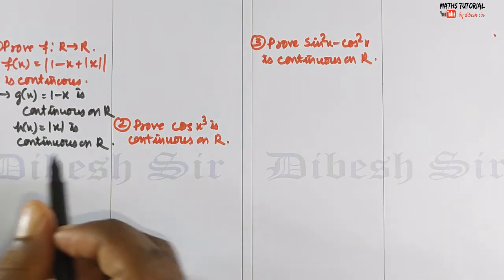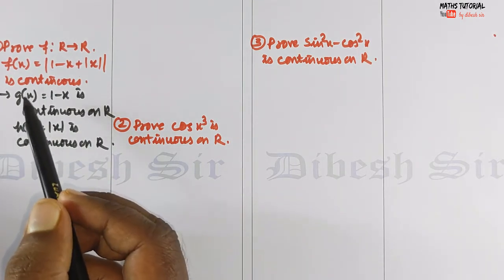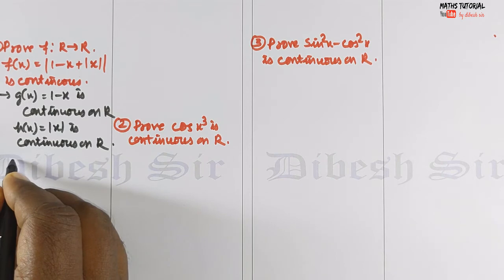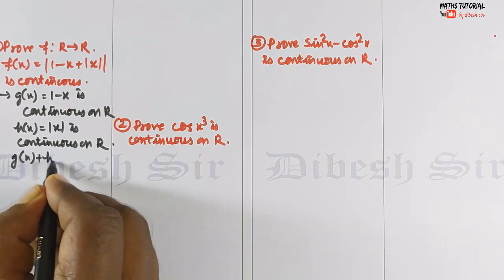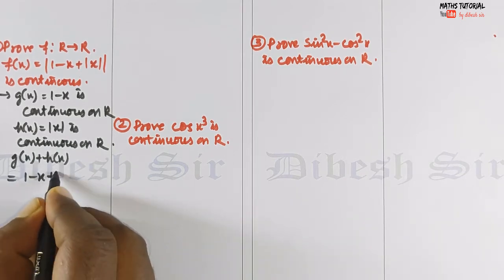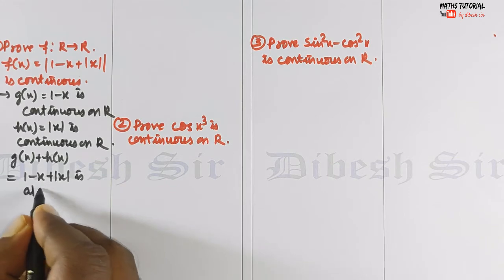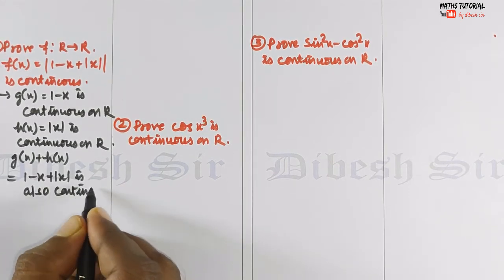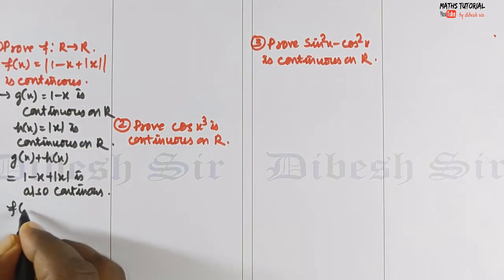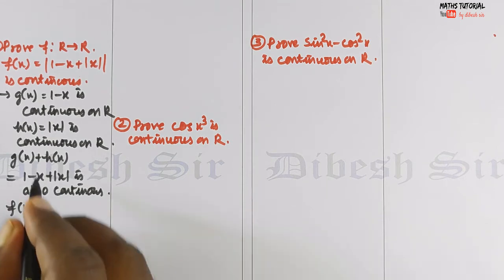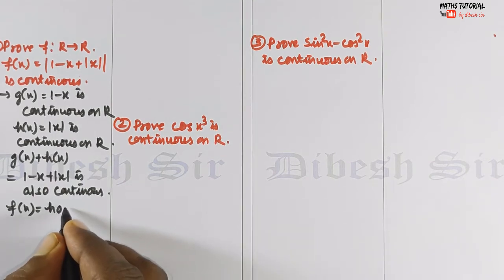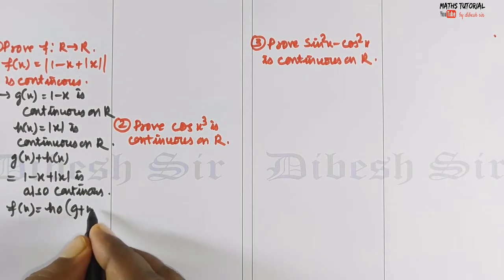We know that if two functions are continuous, then their addition is also continuous. So g(x) + h(x), that is, 1 - x + |x|, is also continuous. Therefore f(x) = |...| which equals h of (g + h)(x).